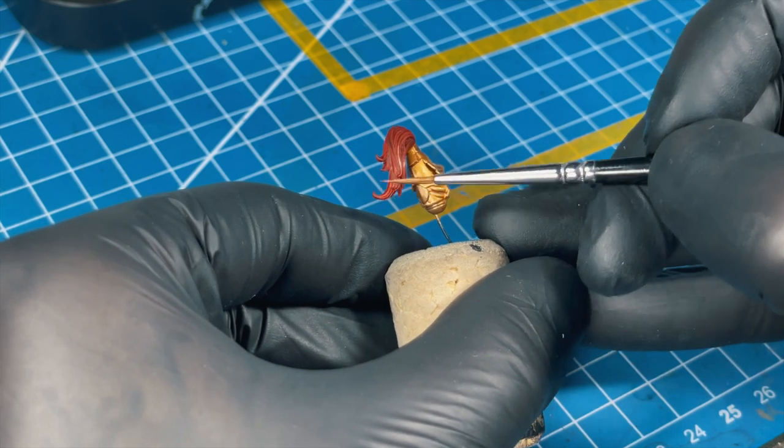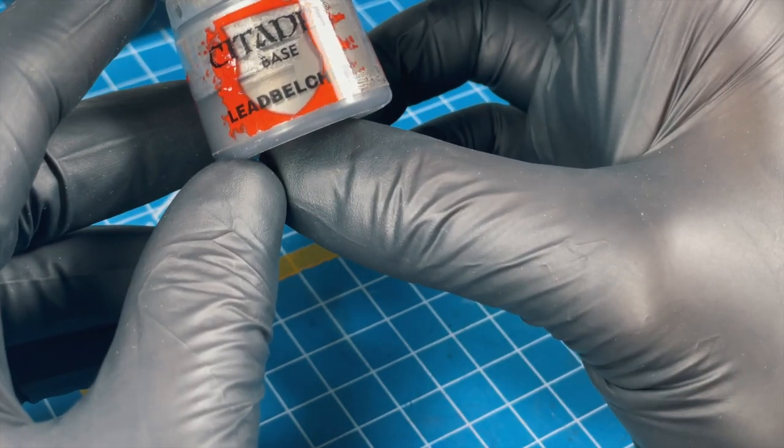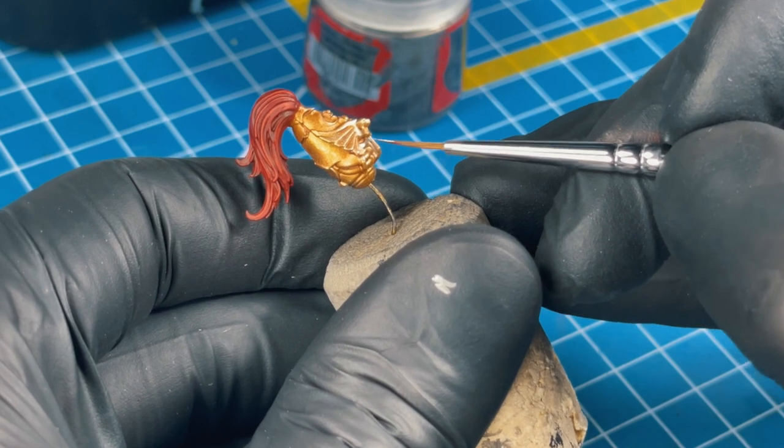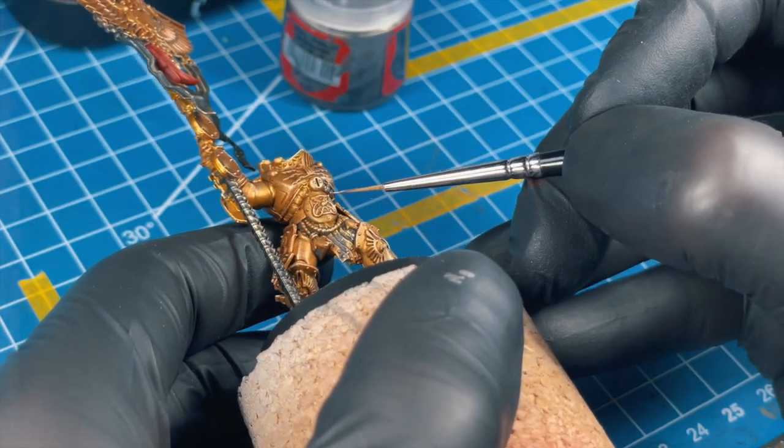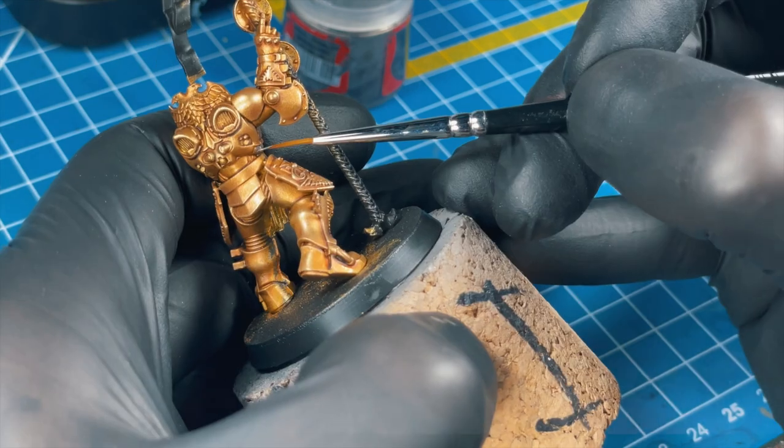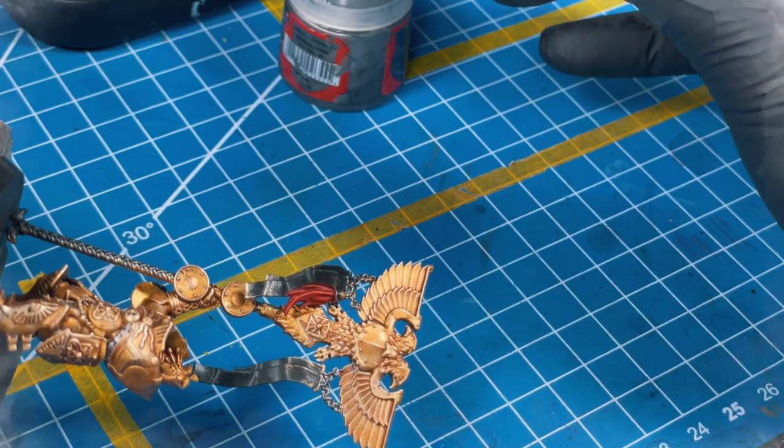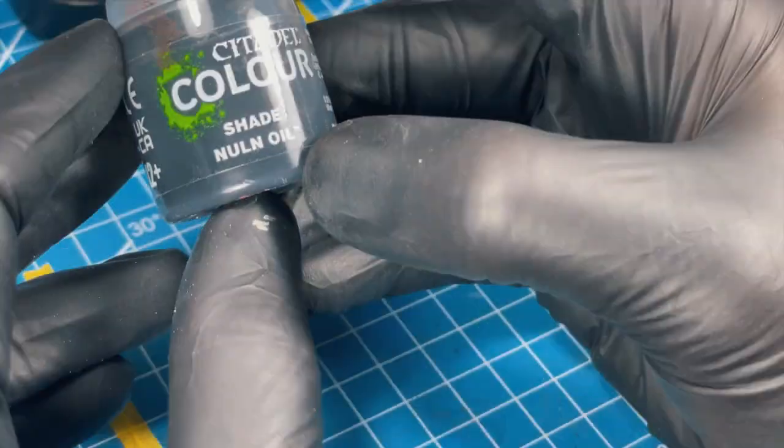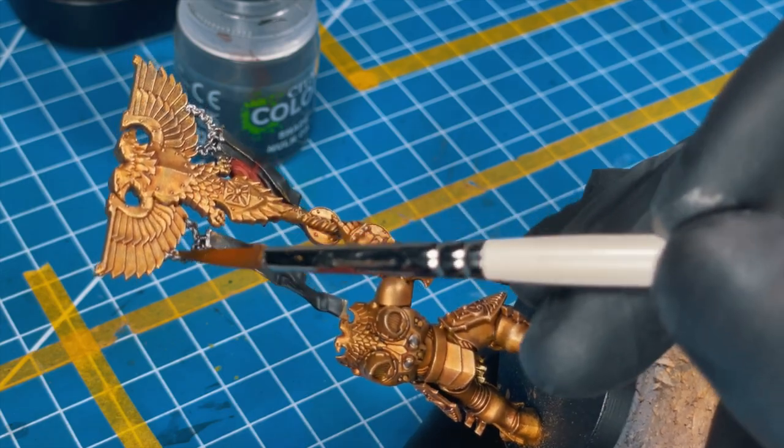It's metal time. Grab Lead Belcher and using this one, paint the face mask on the helmet, some pipes in the back of the Custodes, chains on Aquila, and pipes between abs and chest. Our metal needs some wash, so grab the Nuln Oil and paint all the parts you painted in the previous step.